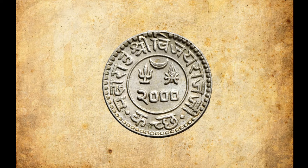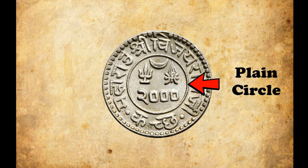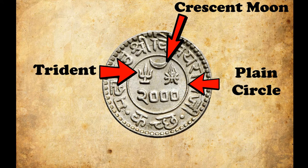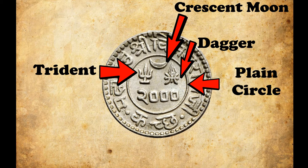On the obverse of the coin, there is a plain circle in the center. Inside that, on the top portion, there is a crescent moon. Below that, on the left side, there is a trident, and on the right side, there is a dagger, both in vertical position facing upward. The year of minting according to the Vikram Samvat calendar is given in the bottom portion of the inner circle.